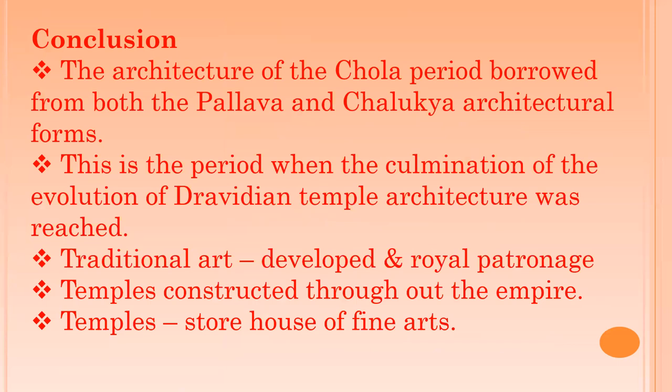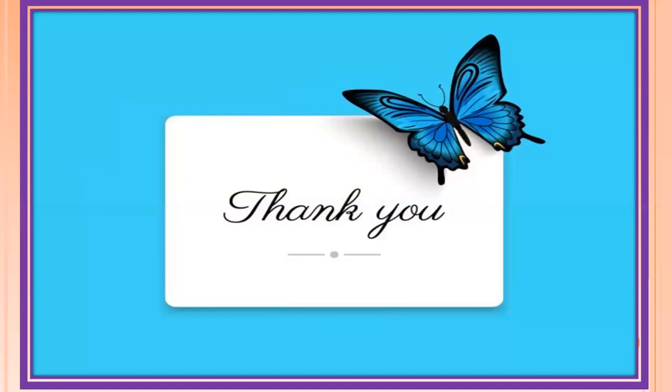The architecture of the Chola period borrowed from both the Pallavas and the Chalukyas. This is the period when the culmination of the evolution of Dravidian temple architecture was reached. Traditional art got fully developed during this period. Nourished by royal patronage, fine arts scaled new heights. Religious themes formed the nucleus of all types of art. Temples were constructed in large numbers throughout the empire, and they became the storehouses of fine art. Thank you, students.